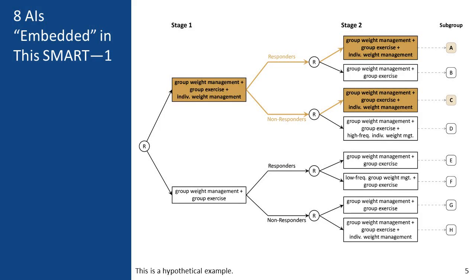Going back to our diagram, there are actually eight adaptive interventions, or AIs, embedded in this SMART. The first is highlighted by individuals who end up in subgroups A and C. By their flow through the trial and their randomizations, they receive treatments consistent with an adaptive intervention that initially recommends group weight management, group exercise, and individual weight management. Responders are recommended to continue that intervention, and non-responders are also recommended to receive group weight management, group exercise, and individual weight management. This is one of eight adaptive interventions embedded in the SMART.